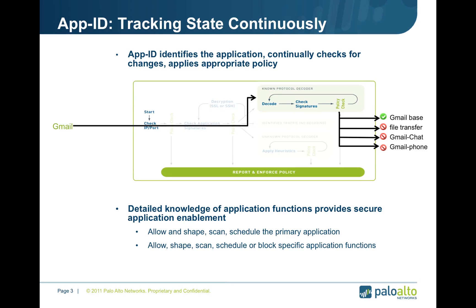Detailed knowledge of the application functions is what allows an administrator to securely enable those specific functions. Rather than the draconian block everything or the unsecure allow everything, we can use AppID and its function control capacities to allow and shape an application. I can allow it and scan it, or I can even schedule the use of that particular application. I can do that same level of control for application functions within an individual application.